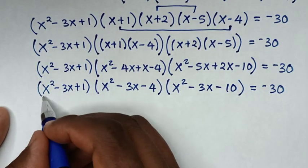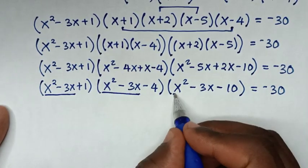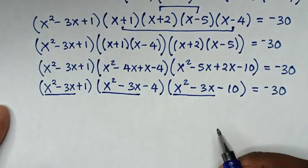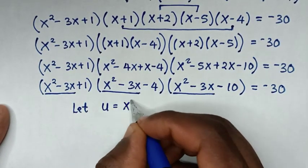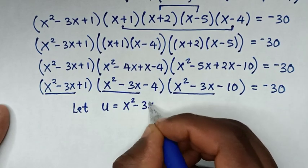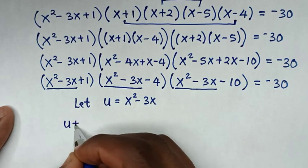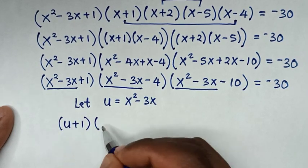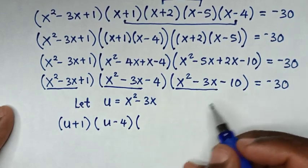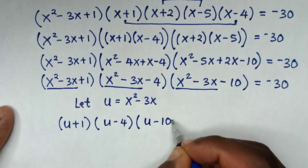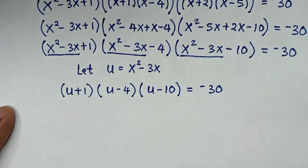We can see that x²-3x appears in all three factors, so we let u = x²-3x. The equation becomes (u+1)(u-4)(u-10) = -30.